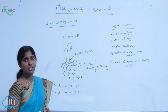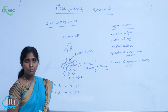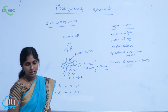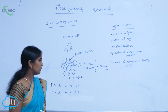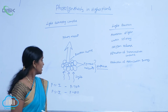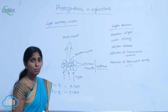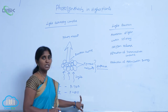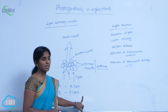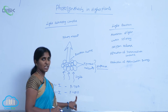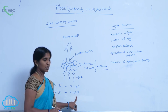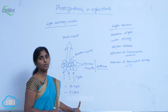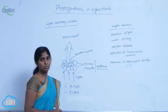In PS2, it is also a reaction center composed with chlorophyll A, but the chlorophyll A pigment's absorption is maximum at 680 nanometers wavelength. Hence, it is called P680. Two different photosystems are involved in photophosphorylation.